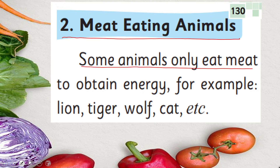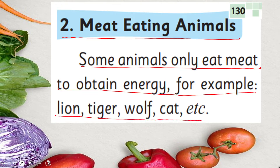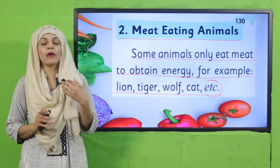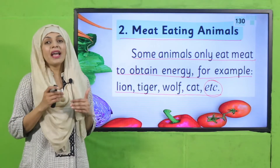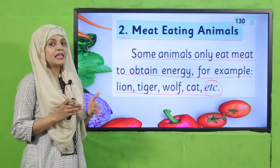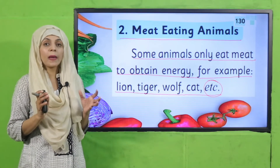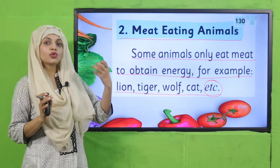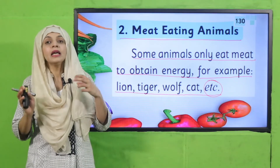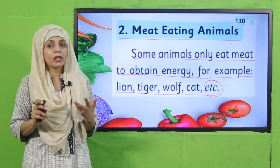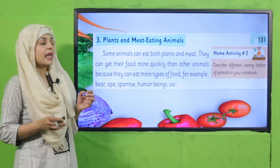Some animals only eat meat to obtain energy — for example, lion, tiger, wolf, and cat. Animals that eat only plants are called herbivores. Animals that eat meat — feeding on other animals to get their energy — are called carnivores.